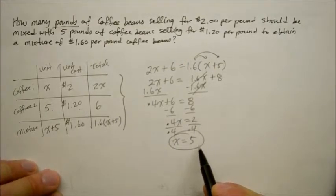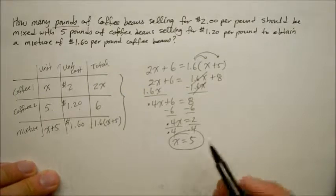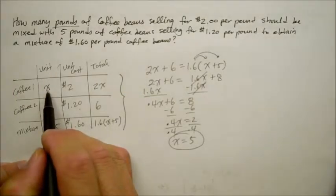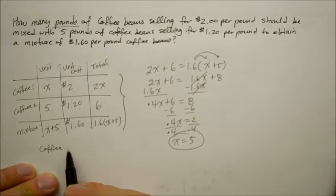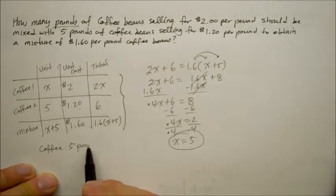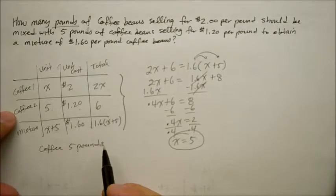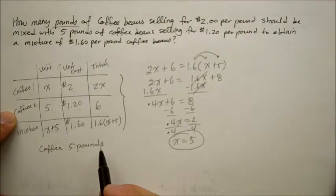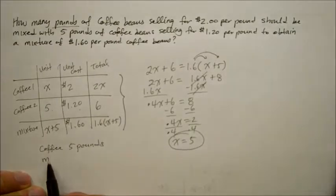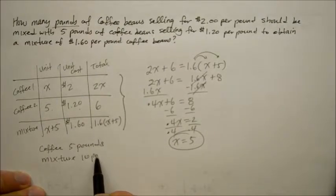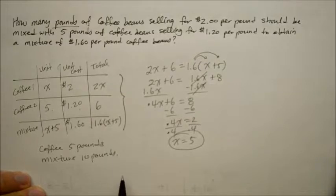So what's this 5? Well, that means we need to have 5 pounds of the better stuff. Coffee 1, we need 5 pounds. And since coffee 2, the homegrown one, is also 5 pounds, the mixture is going to be total of 10 pounds. Sounds fair enough.